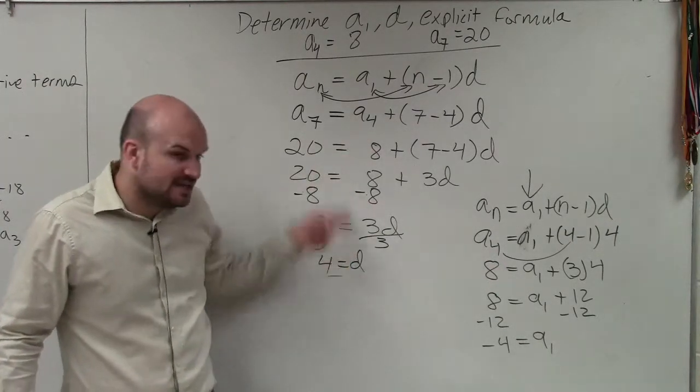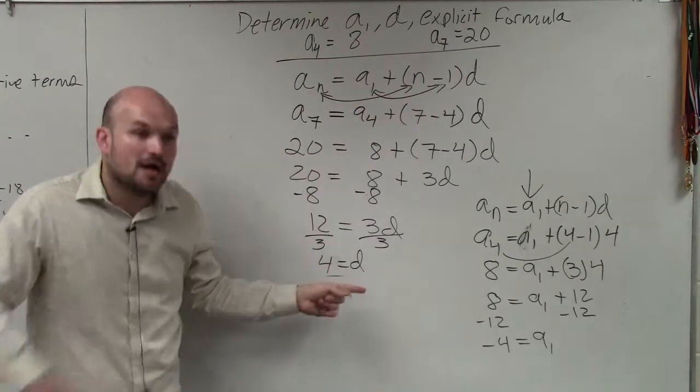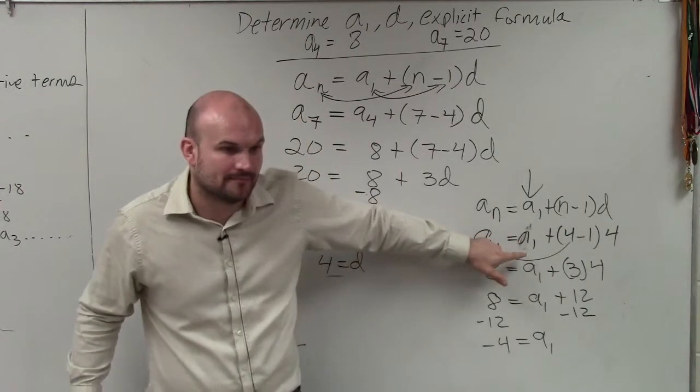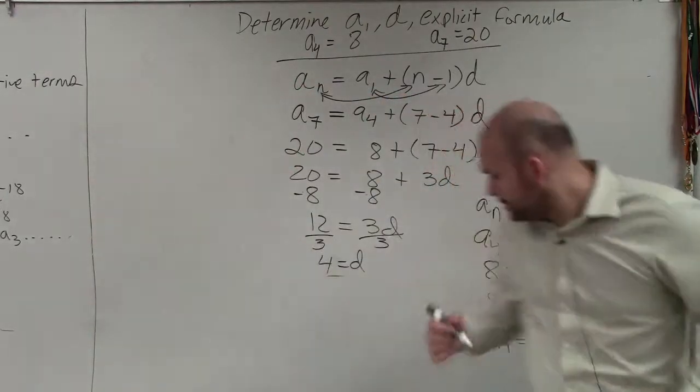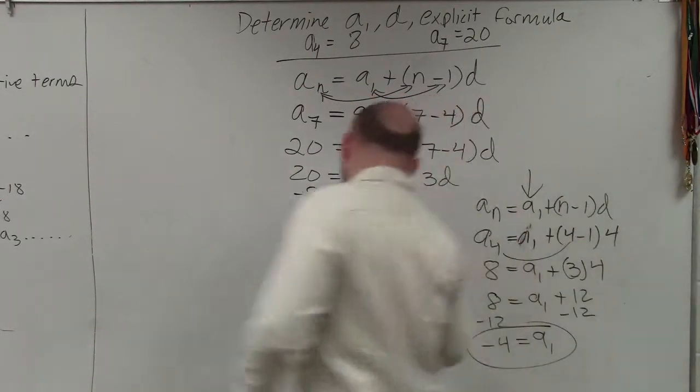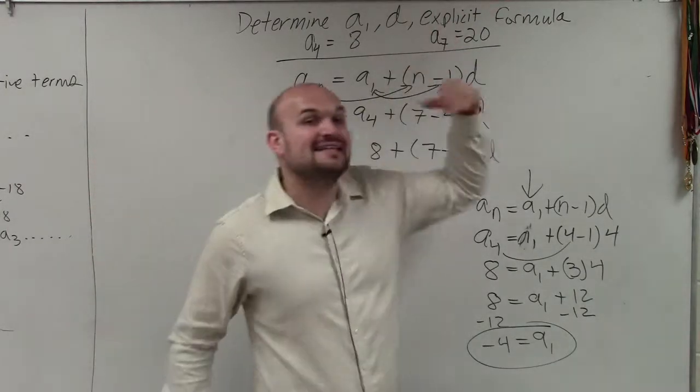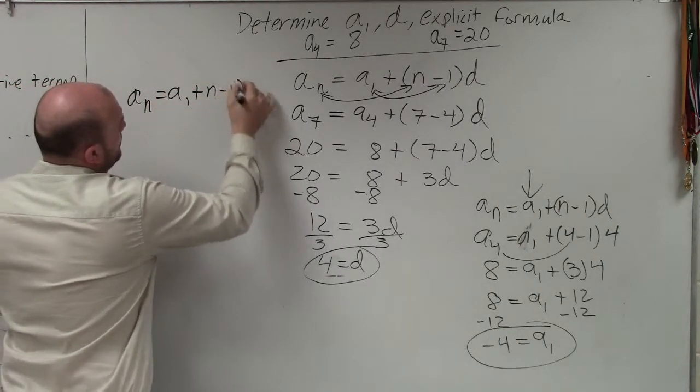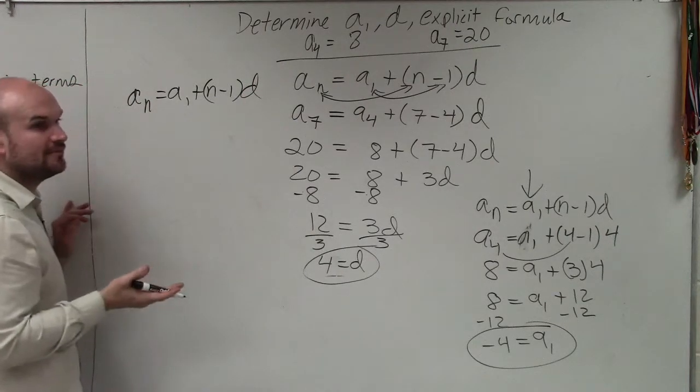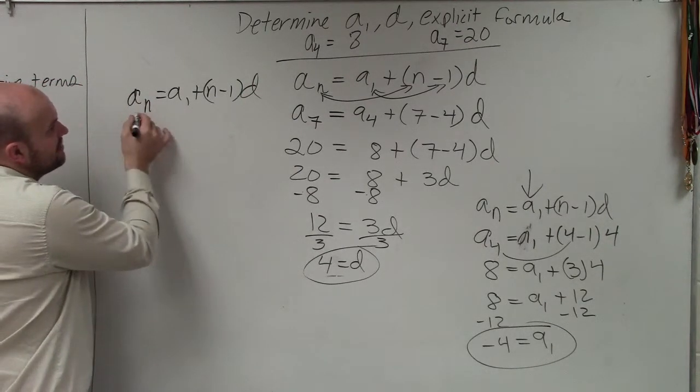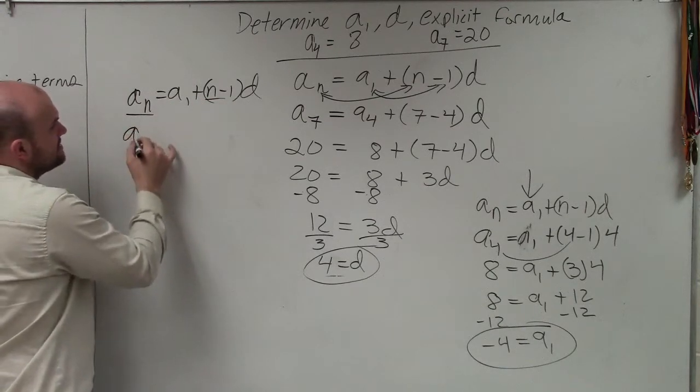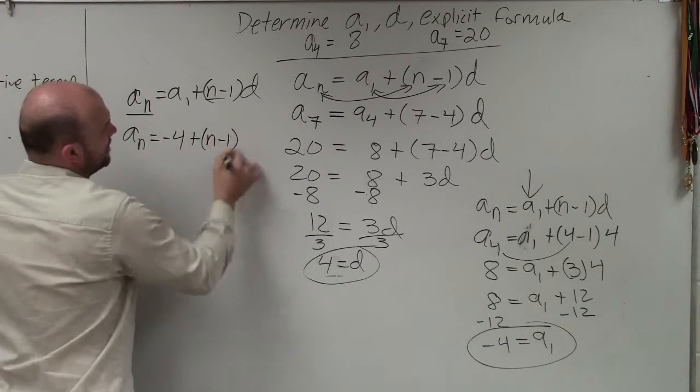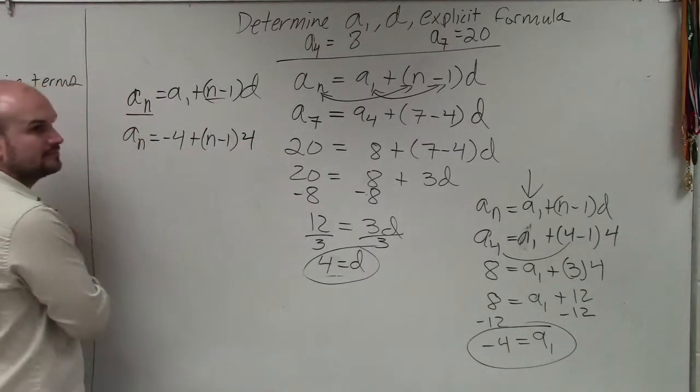Well, this method is what we use to find d. You plug in both of your information to get d. But once you know d, you plug in d and one of the points to find a sub 1. OK? Now that we know what a sub 1 is, and now we know what d is, the last example is find the explicit formula. So again, we're going to go back to our explicit formula. And now what we're going to do is plug in all the information we know. The only thing we're looking for is we don't have an a sub n and an n. But we know what a sub 1 is. A sub 1 is negative 4 plus n minus 1 times d, which is positive 4. That's your explicit formula.